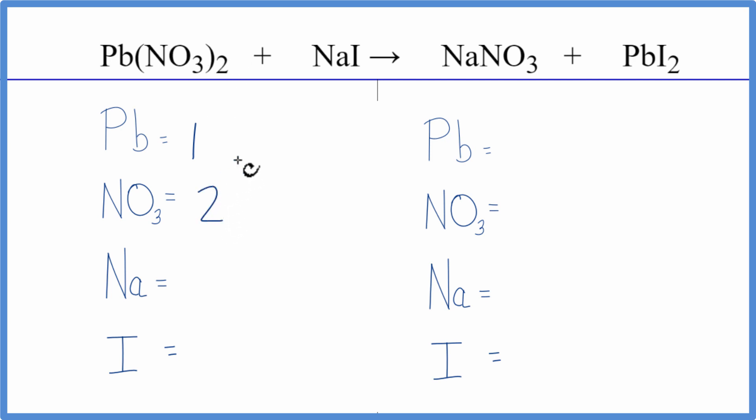On the product side we have one lead, one nitrate, one sodium, and two iodine atoms. To balance it, you can see by counting this nitrate as one thing it makes it neater. Why don't we double the nitrates here?